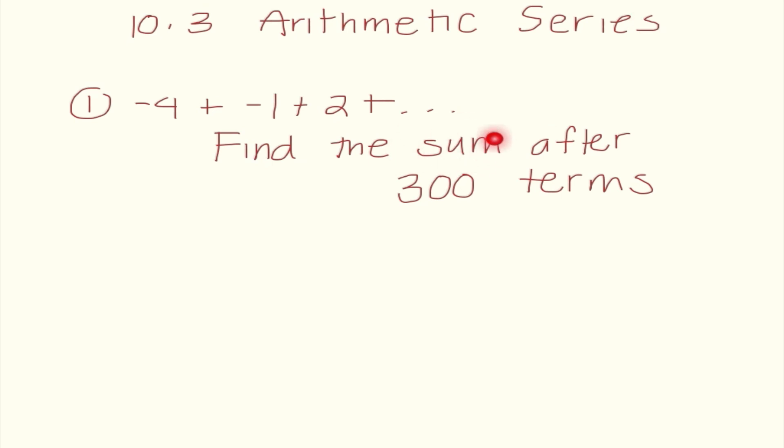So this is what our examples are going to look like. Negative 4 plus negative 1 plus 2, and we need to find the sum after 300 terms. So what this means to us is negative 4, negative 1, and 2 are the terms of a sequence. Is this arithmetic?